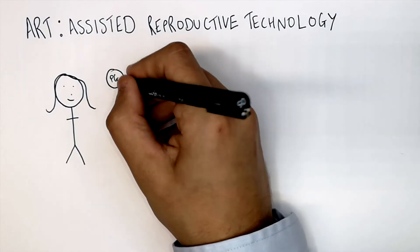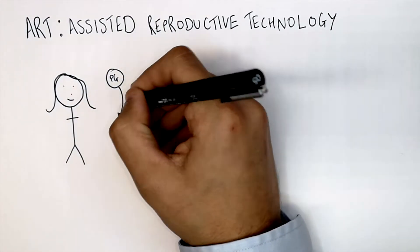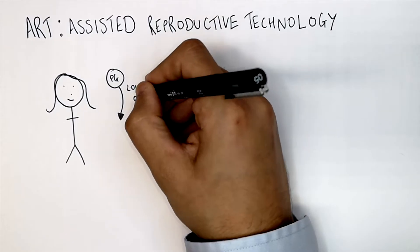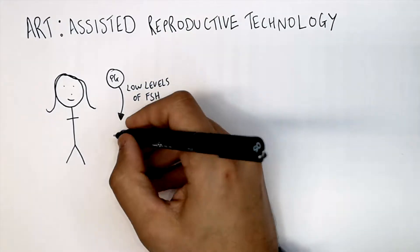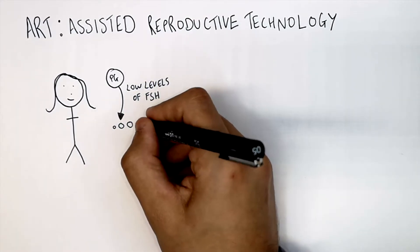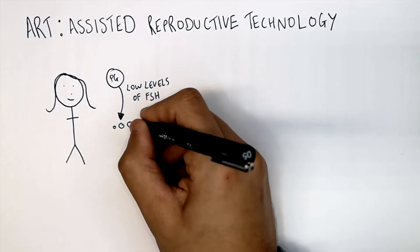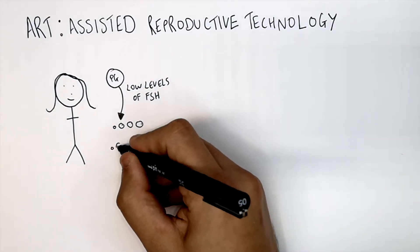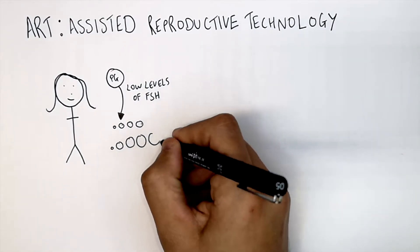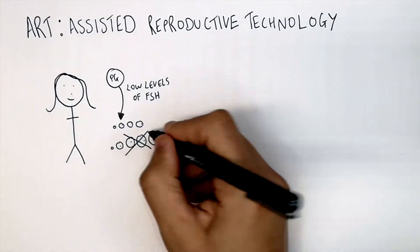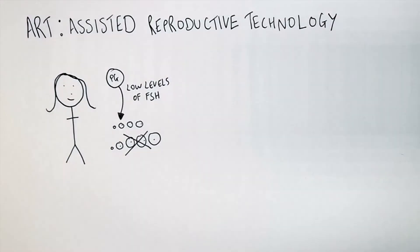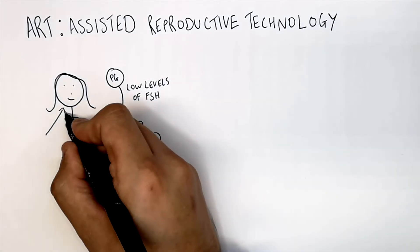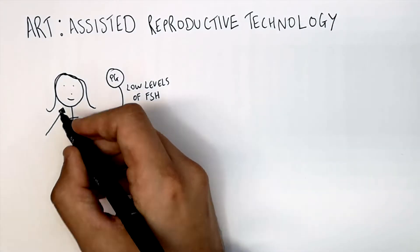If a female's pituitary gland produces low levels of FSH, this means that her egg follicle will struggle to grow. Normally it needs to grow and mature to release an egg, which does not happen with low levels of FSH. So what happens is a female will be given clomiphene.